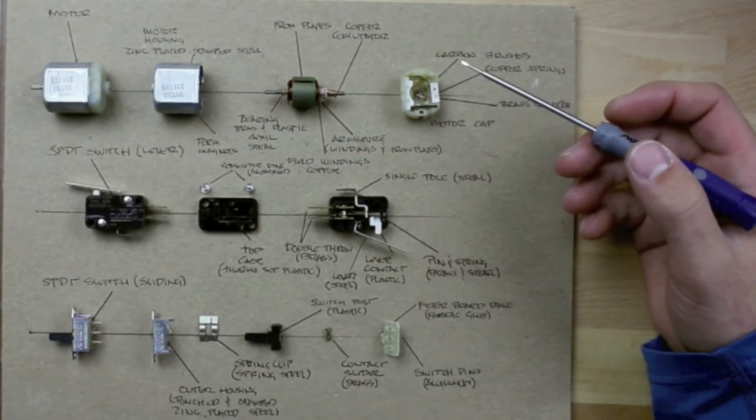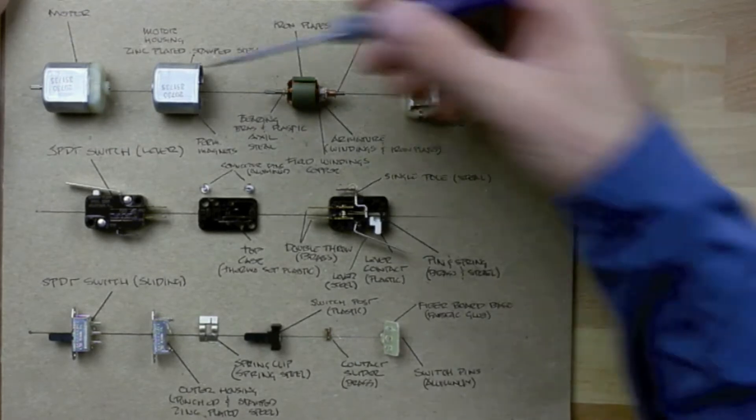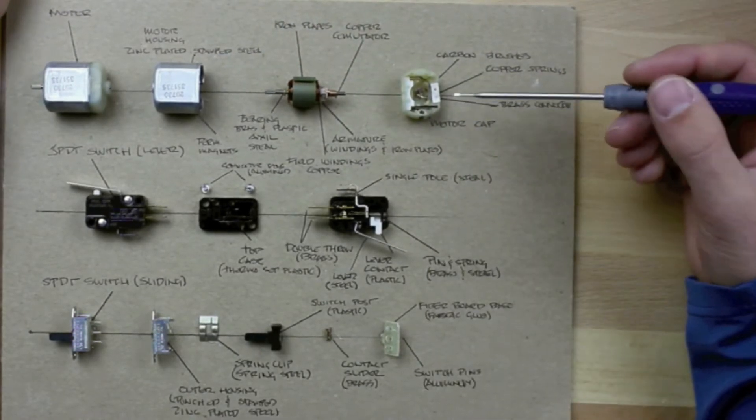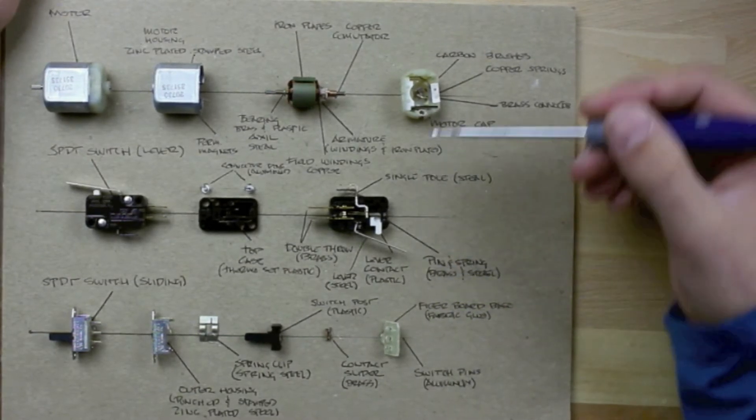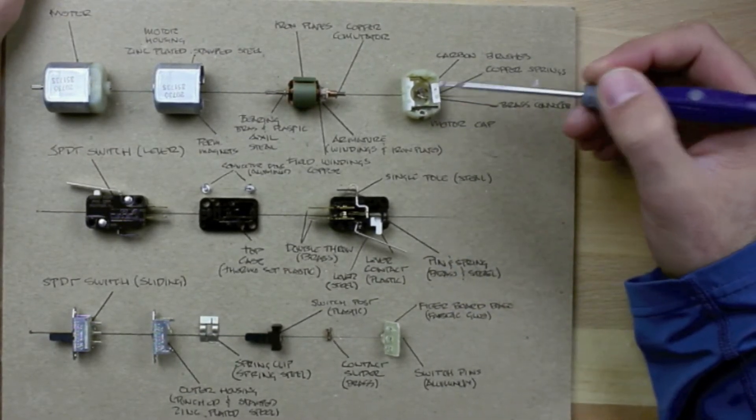In this video we're going to talk about the anatomy of some of the key components of our SpoutBot. We've got our motor and we've also got a single pole double throw lever switch and a single pole double throw sliding switch. Let's talk about the motor first.